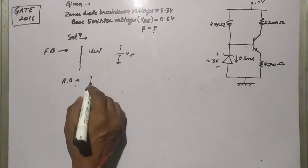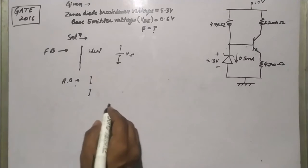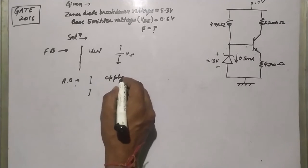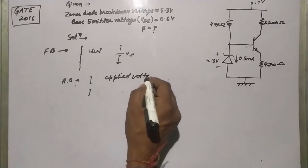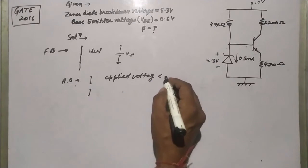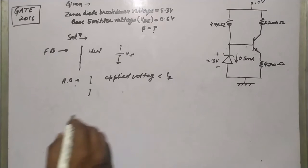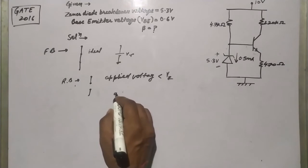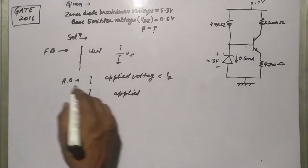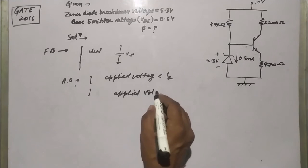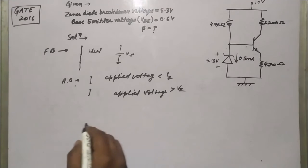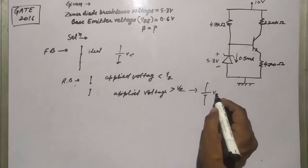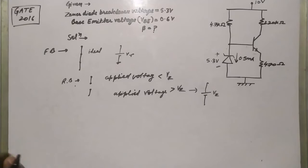The Zener diode acts as open circuit when the applied voltage is less than the breakdown voltage VZ. If the applied voltage in the reverse region is greater than VZ, then it will convert into a voltage source equal to VZ.